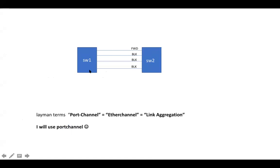Before we start with port channel, I would like your attention on this particular topology where we have interconnected switch one and switch two using four links. We notice that three redundant links are in blocking state to avoid the loop. This is taken care by STP automatically, as STP is by default enabled for all VLANs and all physical ports. So to avoid loops, STP will put redundant links in blocking state, which means we will not be able to utilize all available links.